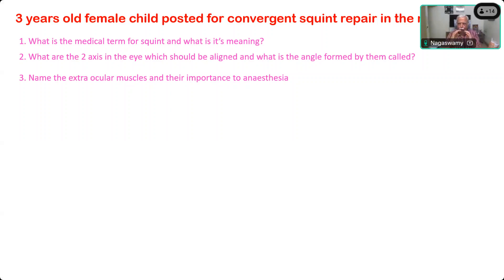You can inject the local anesthetic within the cone formed by the extraocular muscles - intraconal - or outside the extraocular muscles - extraconal. So there are two techniques: retrobulbar, which is intraconal, and peribulbar, which is extraconal. Retrobulbar requires lesser volume but carries more risk of injury to the globe and major blood vessels. Peribulbar requires larger volume but is much safer and more commonly practiced.